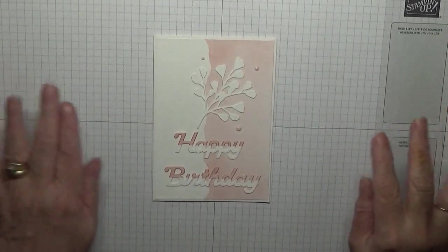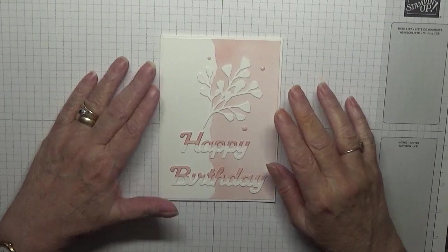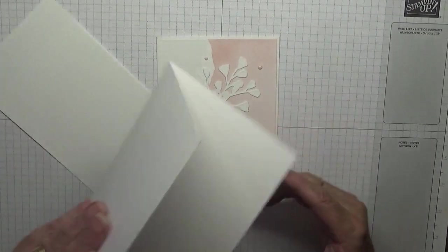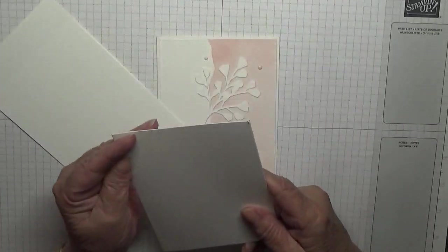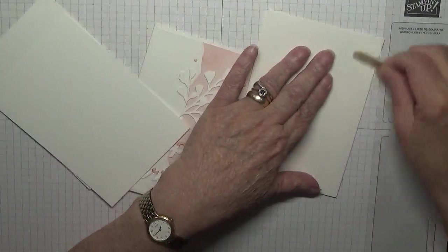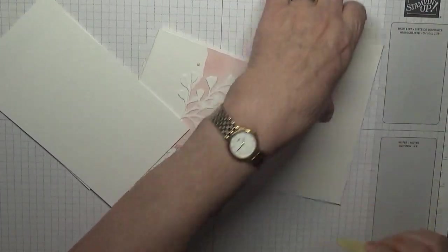Alright, to make this card I have got a blank card base of eight and a quarter by five and seven-eighths, scored at four and one-eighth. Burnish it so it lays flat.